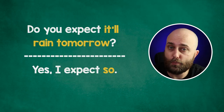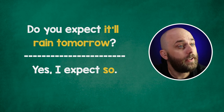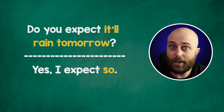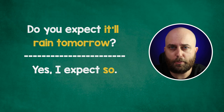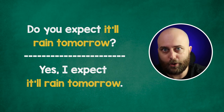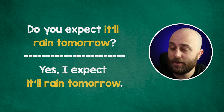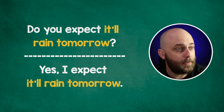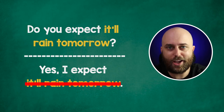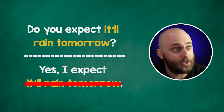Example number two: 'Do you expect it'll rain tomorrow?' — 'Yeah, I expect so.' Again, we're using 'so' instead of repeating 'it'll rain tomorrow.' So, 'Do you expect it'll rain tomorrow?' — 'Yes, I expect that it'll rain tomorrow.' You don't have to say all of that. Instead, you can just say 'Yes, I expect so.'